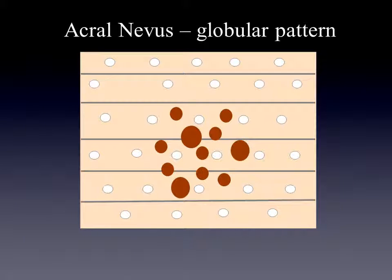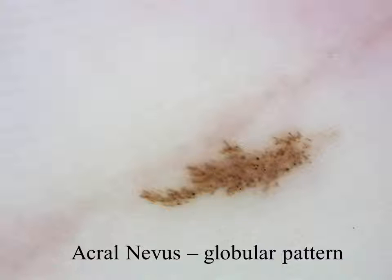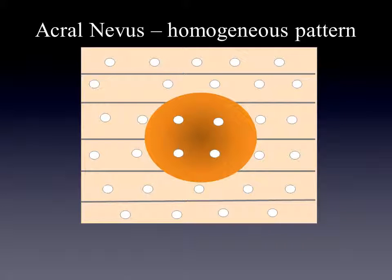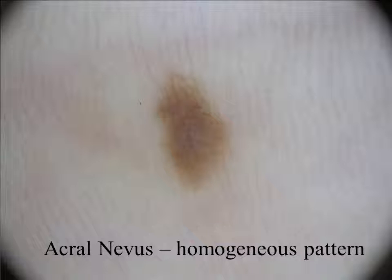The next pattern is the globular pattern, which can also be present in an acral location. Here you have an example — we see the globules along the ridges and the furrows. Finally, we also have in an acral location a homogeneous pattern. Here you see an acral nevus on the palm showing a homogeneous pattern.